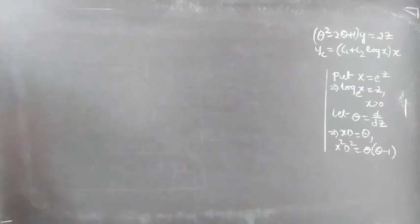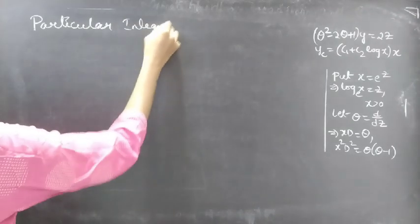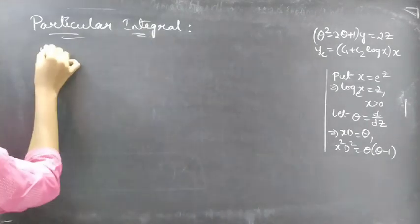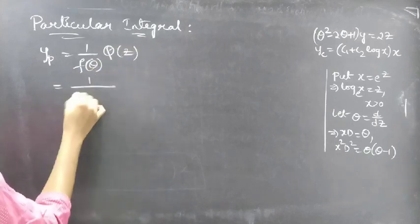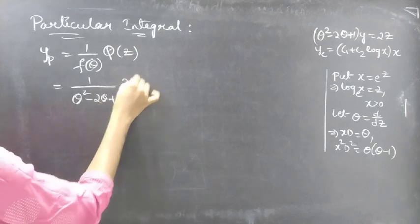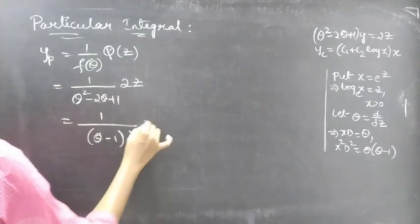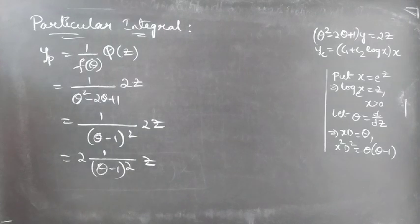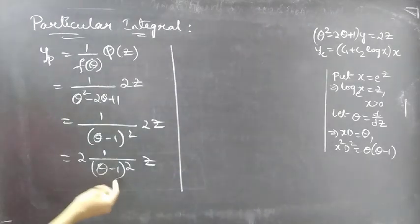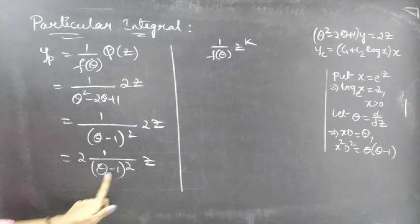Now let's find yp, the particular integral. yp equals 1 over f(theta) times Q(z), where f(theta) is theta squared minus 2 theta plus 1, and Q(z) is 2z. We can write this as 1 over (theta minus 1) squared, all into 2z, which equals 2 times 1 over (theta minus 1) squared into z. This is of the 1 over f(theta) into z to the power k form, so we take the lowest degree term common from the expression.